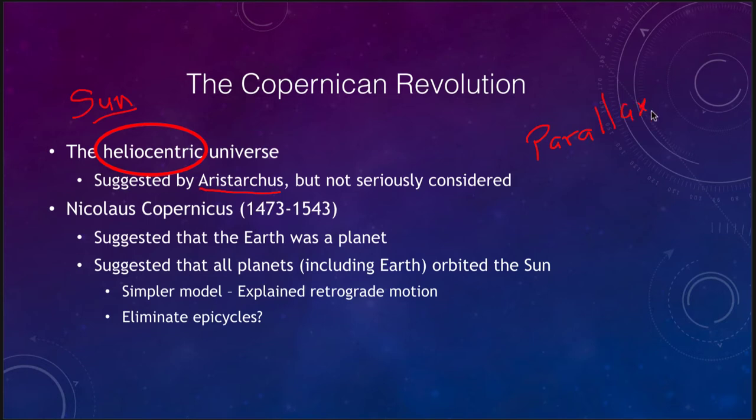Parallax is the apparent motion of a nearby star relative to a much more distant star. It is a prediction that would occur if the earth is moving, and since it could not be seen, that was an argument that the earth could not possibly be moving.